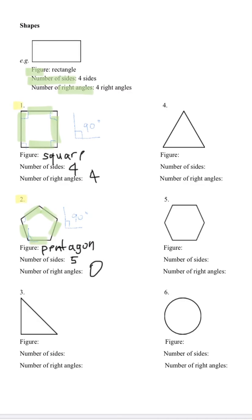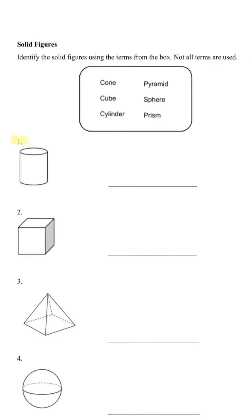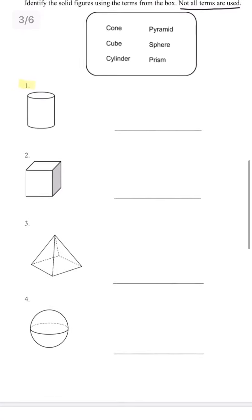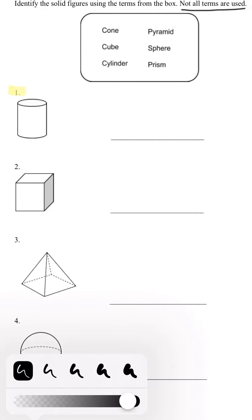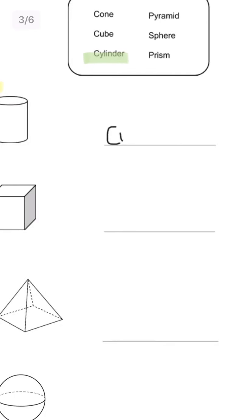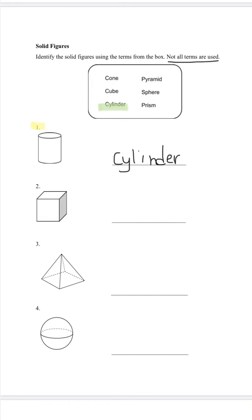Go ahead and pause the video and finish the page. Let's move on to solid figures. The direction says identify the solid figures using the terms from the box — not all terms are used. Number one — it is a cylinder. Go ahead and finish the rest.